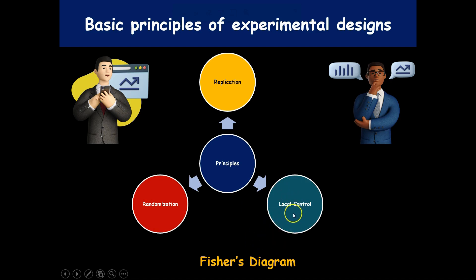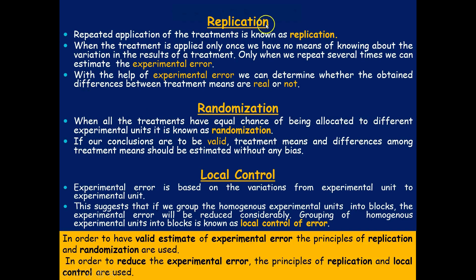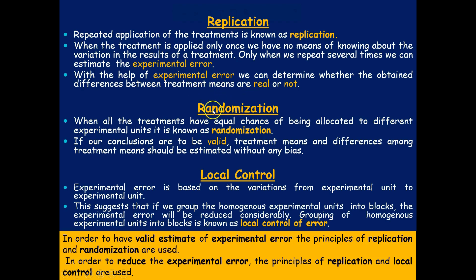The involvement of blocking is used in local control, as shown in Fisher's diagram. As far as replication is concerned, it is the repeated application of treatments. When a treatment is applied only once, we have no means of knowing the variation in results. Only when we repeat it several times can we estimate the experimental error, or average it out. With the help of experimental error, we can determine whether observed differences between treatments are real — statistically, whether the differences are significant or due to chance.